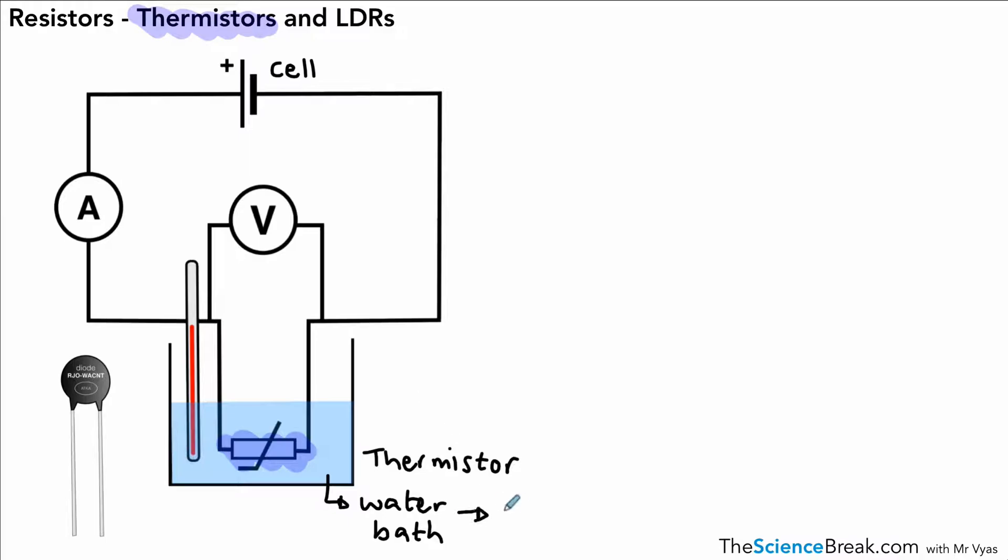The thermometer will measure the temperature. We're also measuring the current in that circuit as well. What we can do is vary the temperature of the water bath and then we can measure the resistance that is given by the thermistor. There's nothing in there measuring the resistance directly in that circuit, so we have to use an equation.